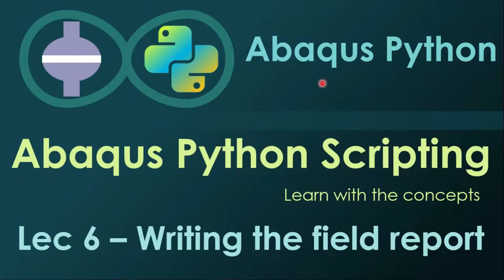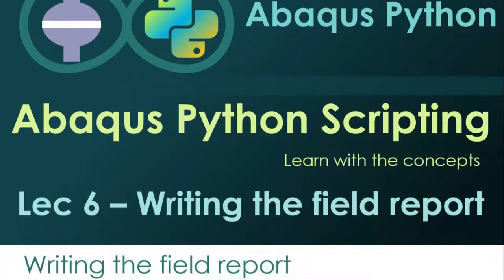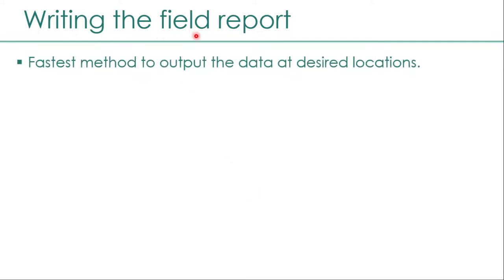Welcome to the Abaqus Python YouTube channel. This is the sixth lecture in the lecture series on Abaqus Python scripting. In this lecture, we will see how we can output data from the Abaqus output database, the ODB file. There are a few options when it comes to outputting data, and writing the field report is one of the fastest and easiest methods available.